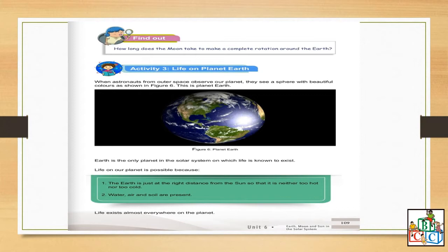Life on Planet Earth. We will start to read. When astronauts from outer space observe our planet, they see a sphere with beautiful colors as shown in figure 6. Now you have to find out at the top how long does the moon take to make a complete rotation around the Earth.